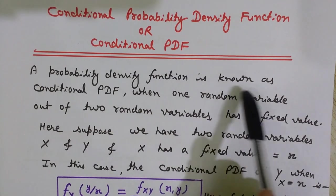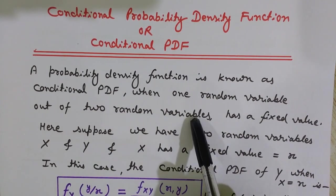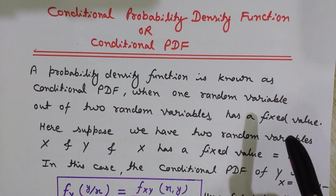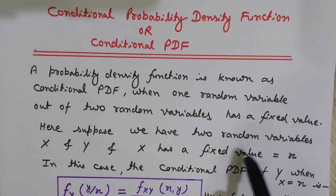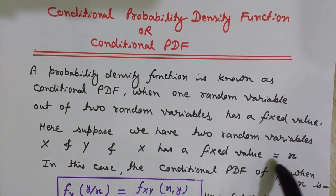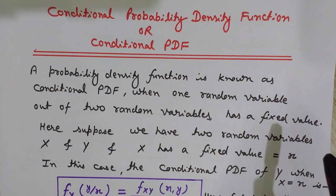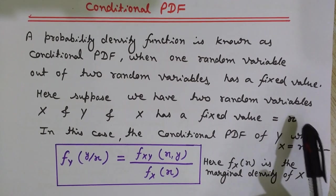Let's start our lecture with the conditional probability density function basics. A probability density function is known as a conditional PDF when one random variable out of two random variables has a fixed value. Suppose we have two random variables X and Y, and out of these, random variable X has a fixed value equal to small x, and we want to find the conditional probability for the other random variable Y.